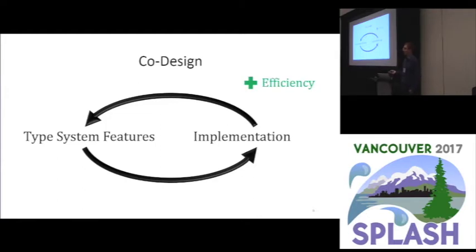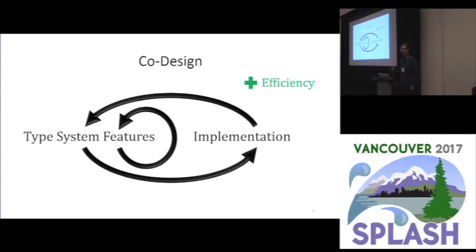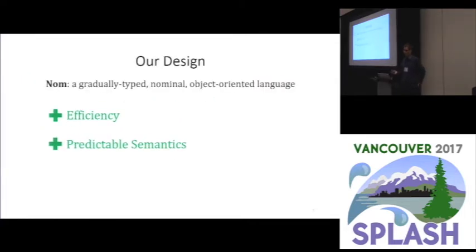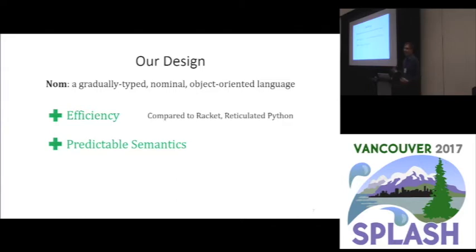When we combine multiple type system features, especially also Gradual Typing, we might also need to co-design them with each other to get predictable semantics. Using this approach, we designed NOM, a Gradually Typed Nominal Object-Oriented Language. This is a very simplistic language because its point is just to demonstrate the viability of this research direction. We give evidence that it is efficient, especially compared to previous results on Racket and Reticulated Python, and it has predictable semantics, especially as opposed to C-sharp, which we'll get into.